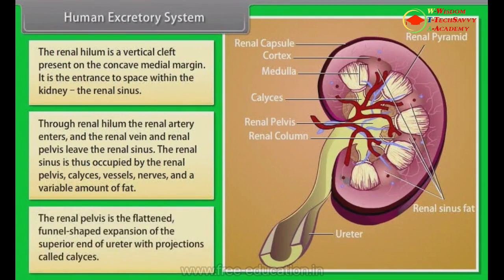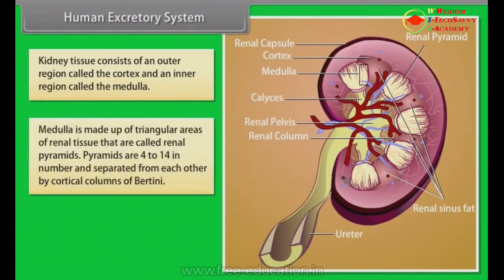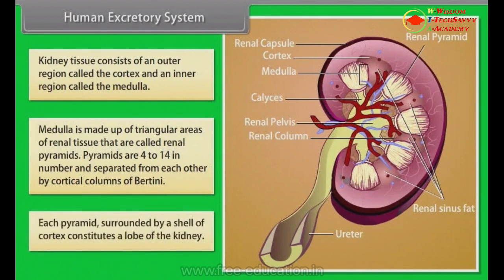The renal pelvis is the flattened, funnel-shaped expansion of the superior end of the ureter, with projections called calyces. Kidney tissue consists of an outer region called the cortex and an inner region called the medulla. The medulla is made up of triangular areas of renal tissue called renal pyramids, which are 4 to 14 in number and separated from each other by cortical columns of Bertin. Each pyramid surrounded by a shell of cortex constitutes a lobe of the kidney.